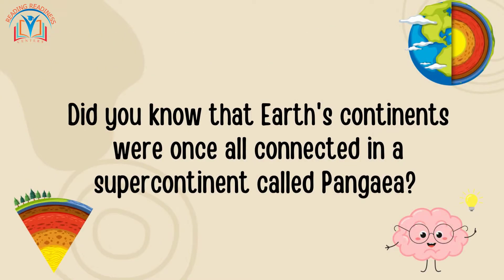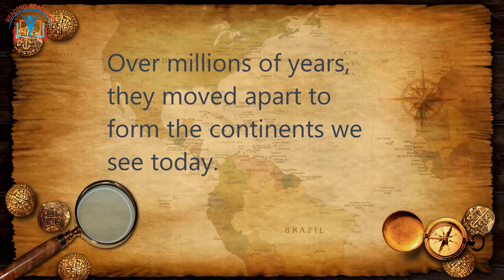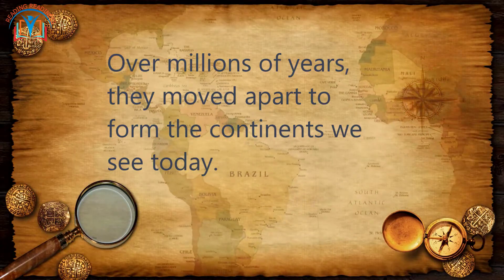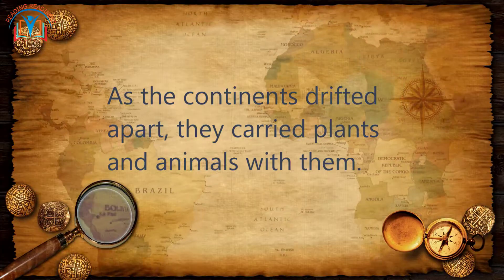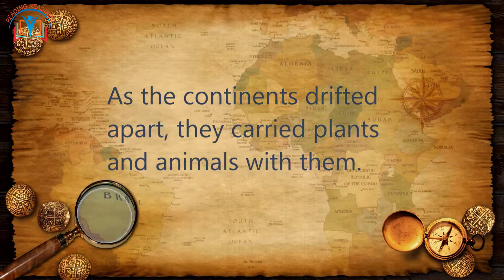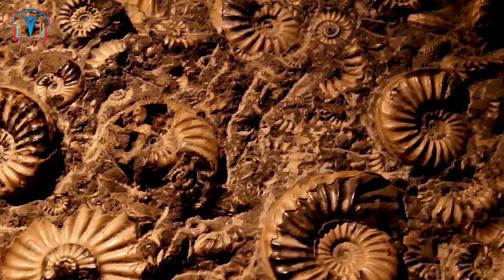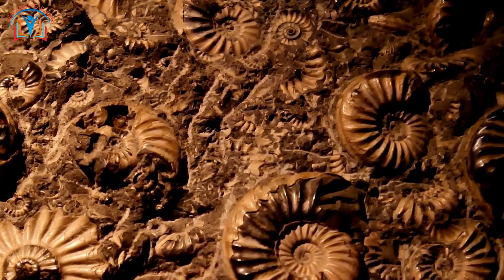Did you know that the Earth's continents were once all connected in a supercontinent called Pangaea? Over millions of years, they moved apart to form the continents we see today. As the continents drifted apart, they carried plants and animals with them. That's why we find similar fossils on continents that are now far apart.